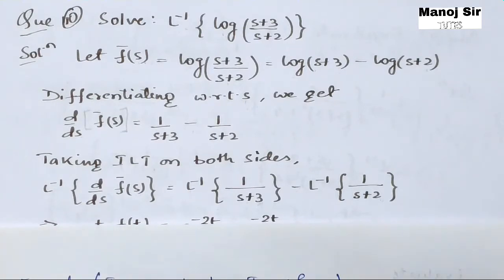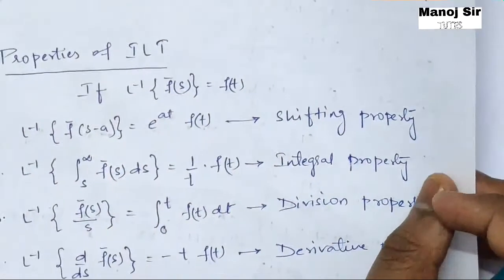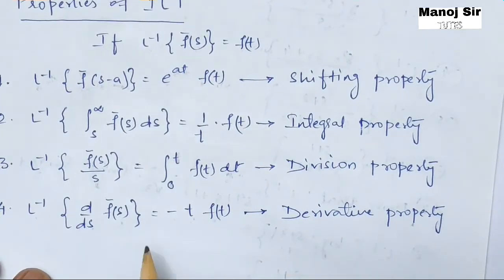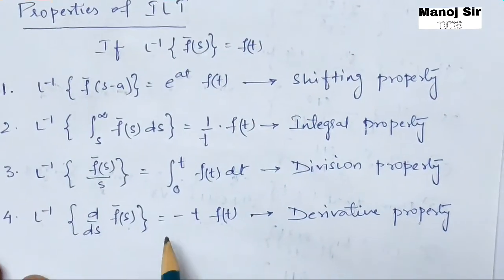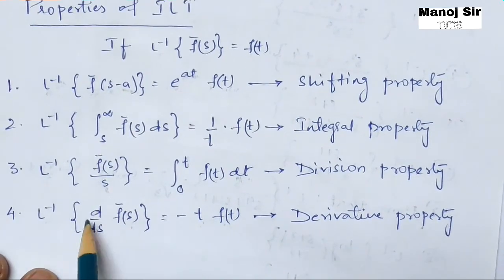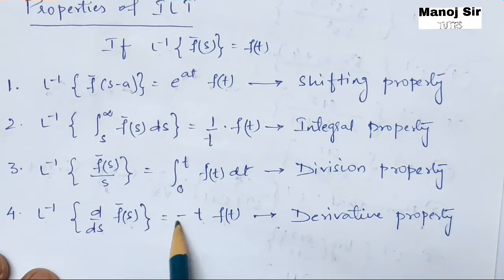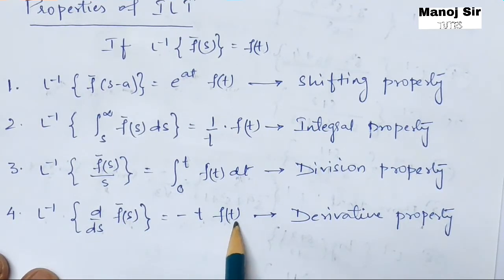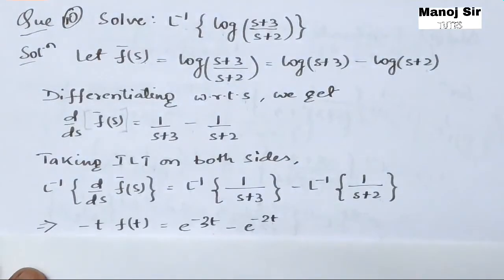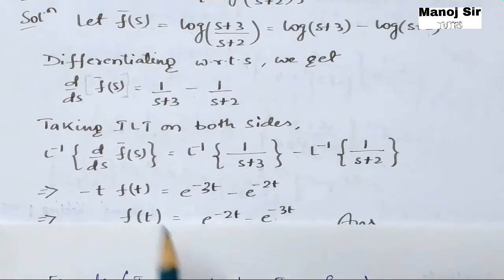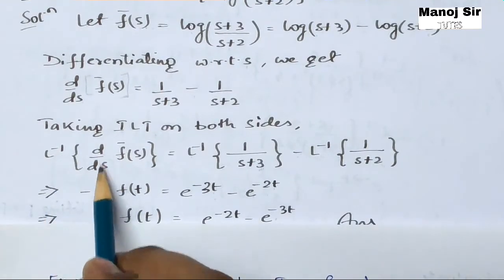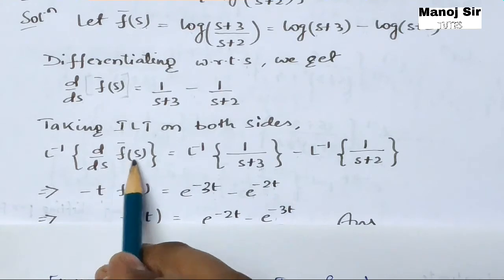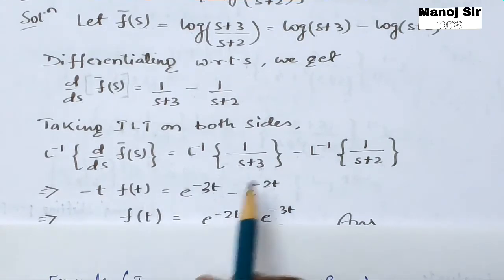Because of the d/ds term, we apply the derivative property. The derivative property states: inverse Laplace transform of d/ds of f̄(s) equals minus t times f(t). So the left-hand side converts to minus t times f(t) using this derivative property.